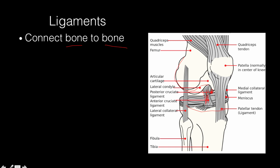If someone tears a ligament, that injury is called a sprain. A partial tear would slowly heal on its own — slowly because ligaments don't get a lot of blood, and therefore don't get a lot of sugar and glucose, so they take a long time to heal. If a ligament fully tears, it will not heal on its own, and that joint would be unstable. The only option to regain stability would be surgery, where the ligament is sewn back together or reattached at its attachment point.